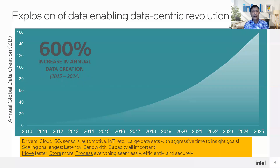This graph from IDC shows the explosion of data. Cloud, 5G, data from sensors, automotive, IoT — these applications are demanding very aggressive time to gain insights in real-time from large datasets. We have to meet these scaling challenges. Latency, bandwidth, and capacity are all important to meet customer needs with rapid innovation. We have to store more data, move the data faster, and process all the data quickly, seamlessly, efficiently, and securely, and determine where in the storage hierarchy we can store this data.